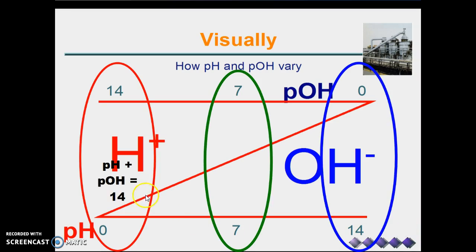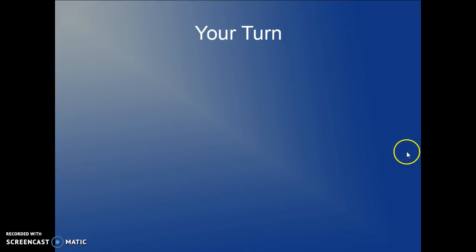Hydrogen ion concentration, this is the acidic range. Over here on the right, this is the basic range. And here in the middle, that's the neutral range.